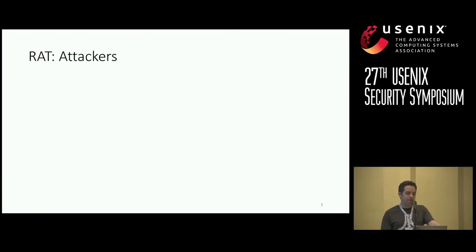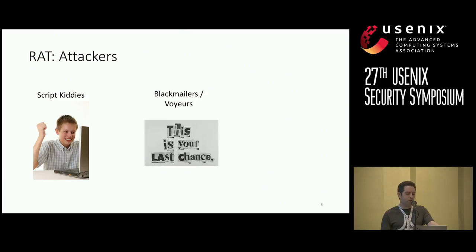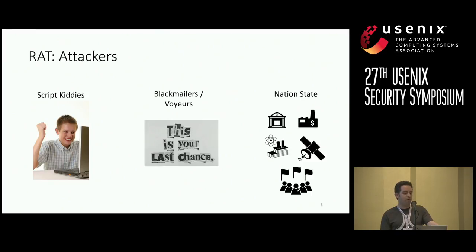Unfortunately, there are a variety of RAT families offering rich functionality that are free to download. There are also detailed tutorials and support communities easily accessible in hack forums, so now almost anyone can use this class of malware. RATs are mainly used by unsophisticated attackers like script kiddies. The most common motivations are sextortion, voyeurism, and blackmailing. However, previous research has shown that nation states have also used freely available RATs for targeted operations against political dissidents and for industrial espionage.